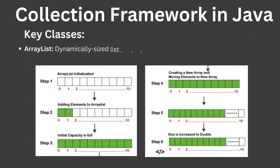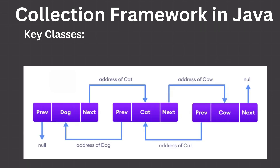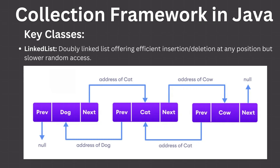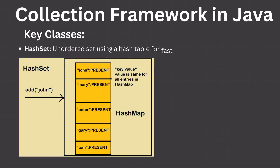Key Classes. ArrayList: A dynamically sized list backed by an array, providing efficient random access but slower insertion and deletion in the middle. LinkedList: A doubly-linked list offering efficient insertion and deletion at any position but slower random access. HashSet: An unordered set using a hash table for fast lookup, insertion, and deletion.